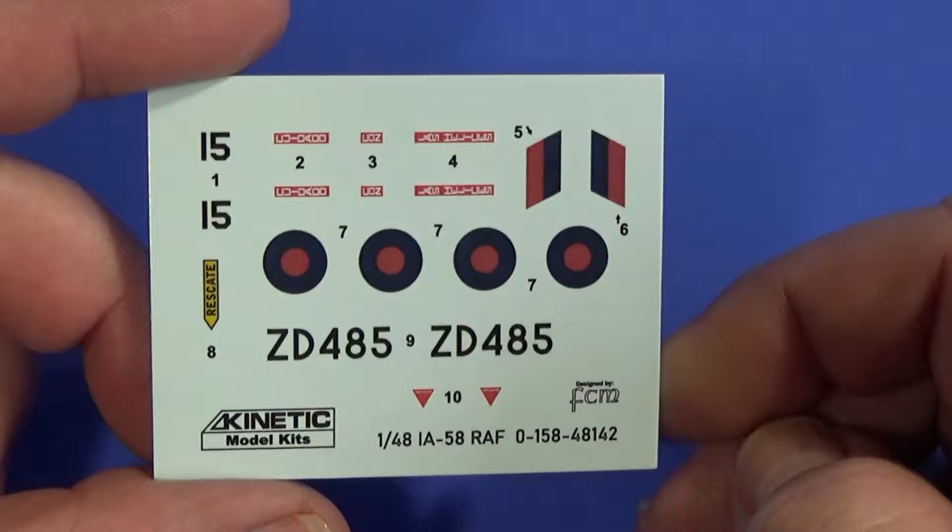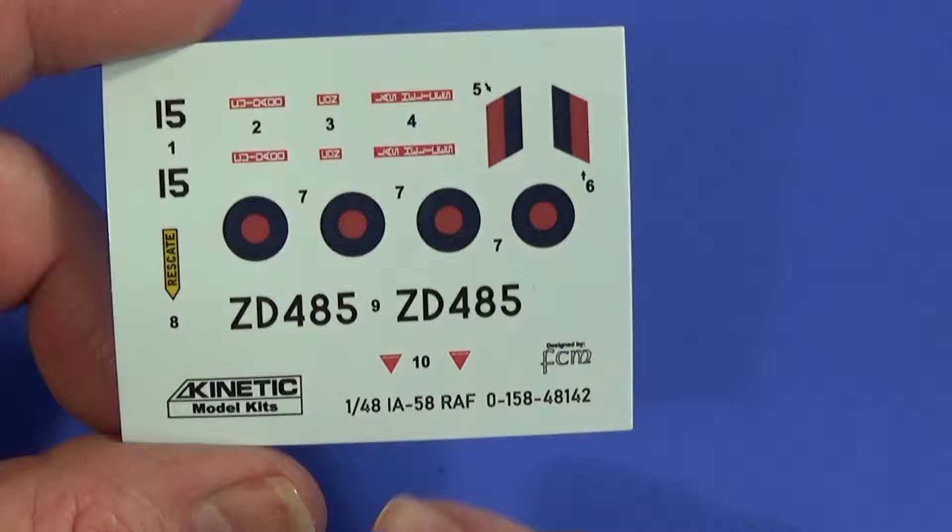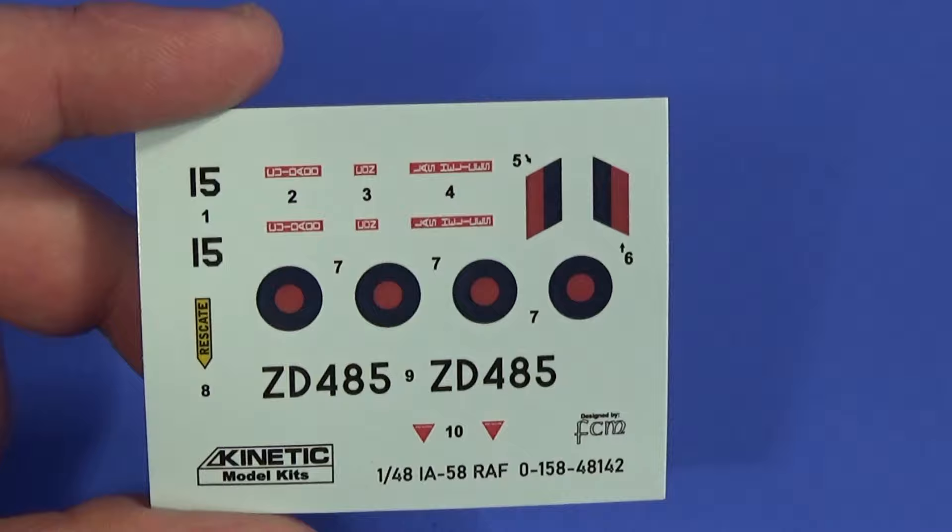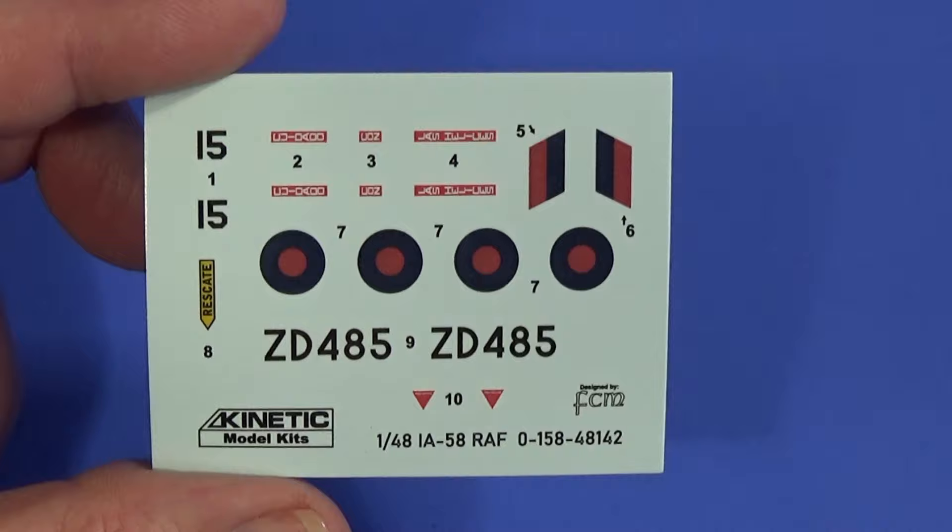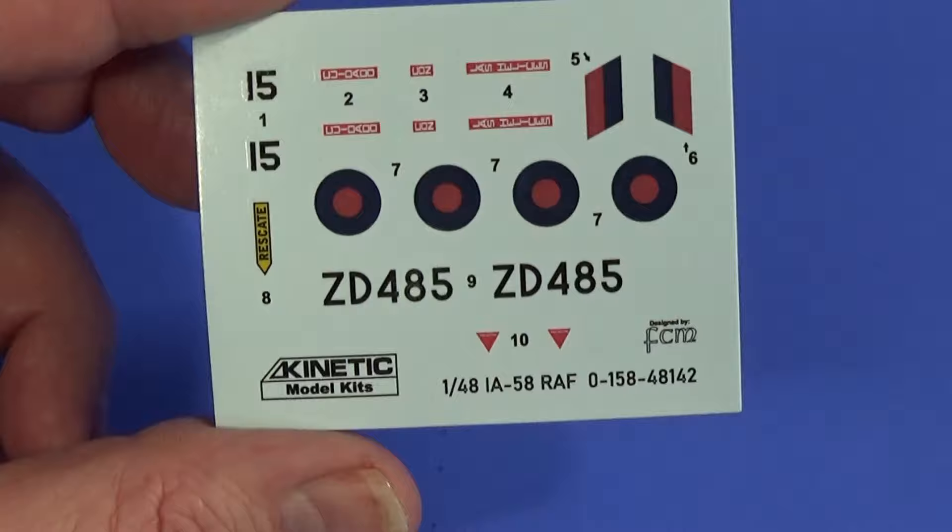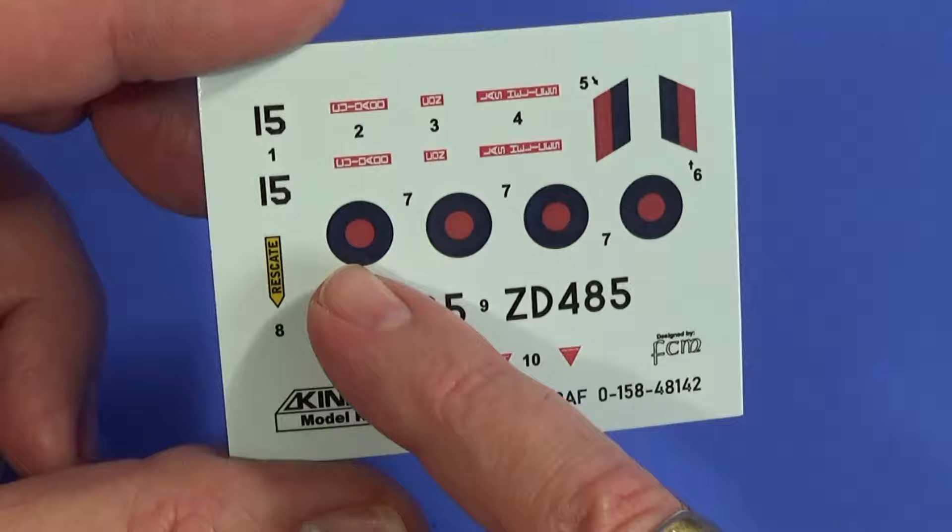We do have a decal sheet. It's fairly minimal, I have to say. It was an aircraft that was captured and so had RAF roundels, fin flashes, and serial number put on. However, I'm kind of surprised there's not more stenciling on this. Maybe they just didn't put a lot of stencils on the aircraft, which is fine by me.